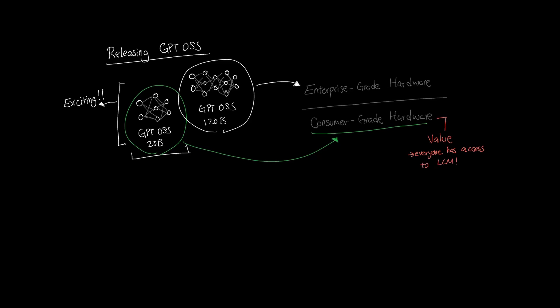For frame of reference, here are the models that GPT OSS is competing against for the 20 billion version: Quen 3 4 billion, Quen 3 14 billion, GLM 4.5 Air, and DeepSeek V3.